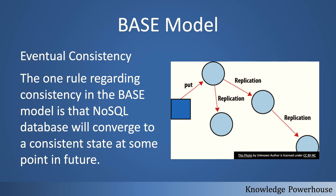The last letter, E, stands for Eventual Consistency. The rule is that a NoSQL database will converge to a consistent state at some point in the future. Even though the database is not currently consistent, it will not remain in a non-consistent state forever — at some point it will become consistent. There is no guarantee the database will be in a consistent state after each transaction, unlike the ACID model where the database is always consistent after every transaction. With eventual consistency, after replication and related processes complete, the database will reach a consistent state.